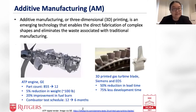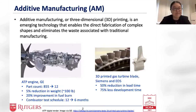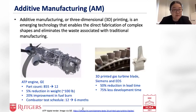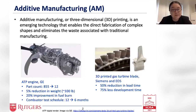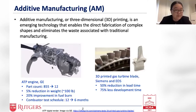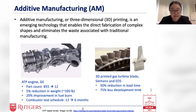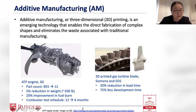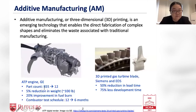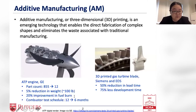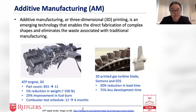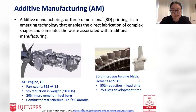Additive manufacturing, or 3D printing, is an emerging technology that enables the direct fabrication of complex shapes and eliminates the waste associated with traditional manufacturing. One widely known successful case is GE's ATP engine. Around a third of the engine consists of 3D printed titanium parts, making it the first commercial aircraft engine to do so. The use of AM technology allowed the 855 separate components to be reduced to just 12.